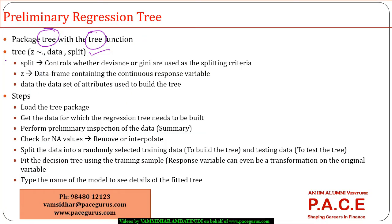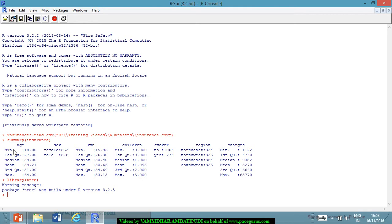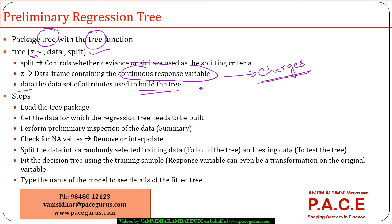The most important argument is 'z', the data frame containing the continuous response variable. For z, I would give the field 'charges' since that's the continuous variable. The 'data' argument takes all remaining attributes used to build the tree, specified with a dot. For 'split', there are two types: deviance or Gini coefficient as the splitting criteria. I can try one model with deviance and another with Gini to see which does a better job in terms of estimation.